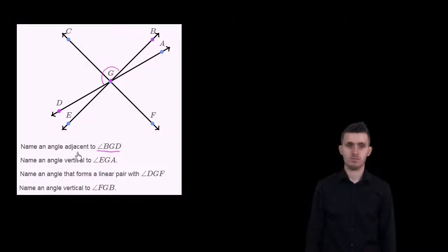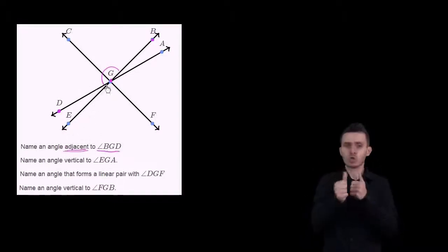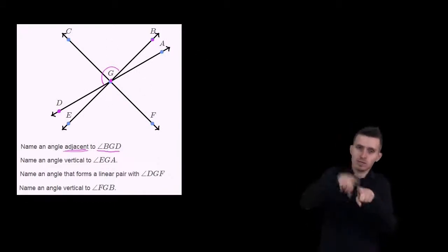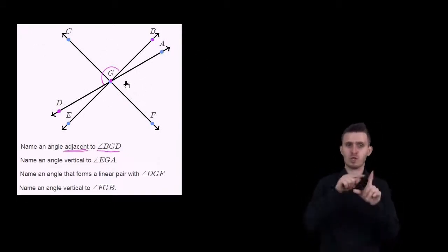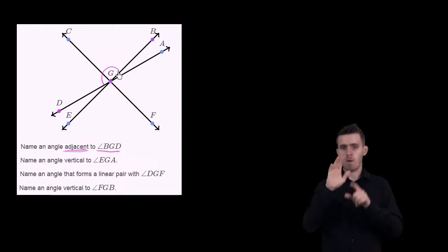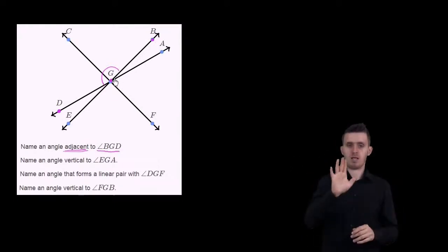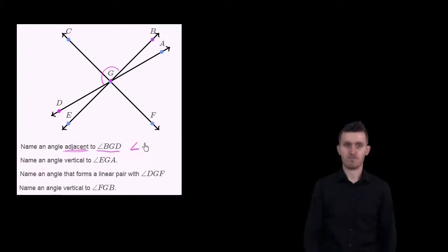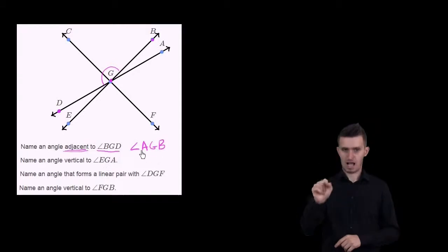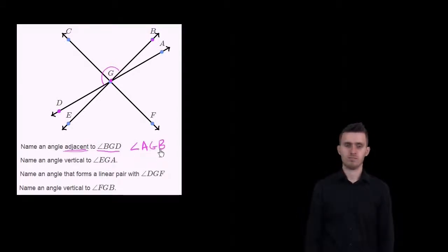So angle BGD is this entire angle right over here. When we talk about adjacent angles, we're talking about an angle that has one of its rays in common. For example, angle AGB has one of the rays in common - it has GB in common with angle BGD. So we could say angle AGB, which could also be called angle BGA. BGA and AGB are both this angle right over here.